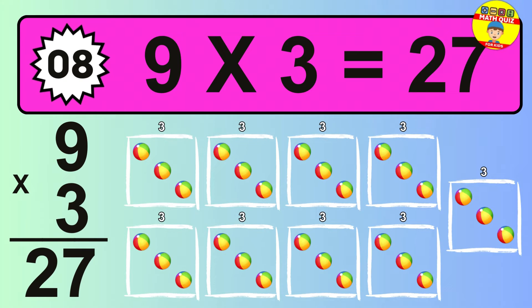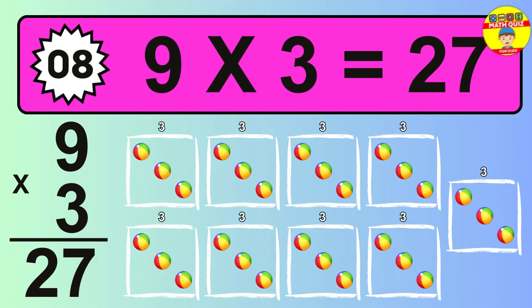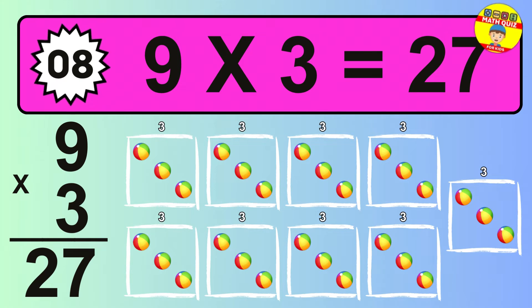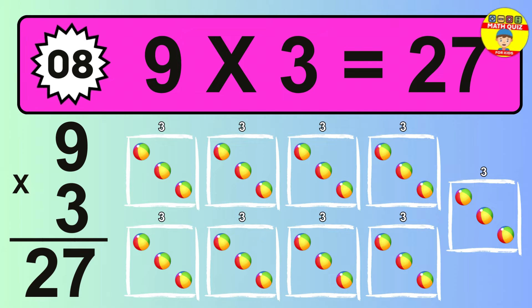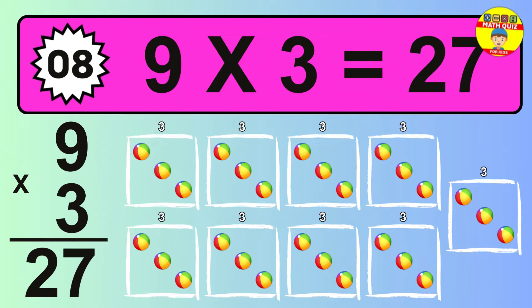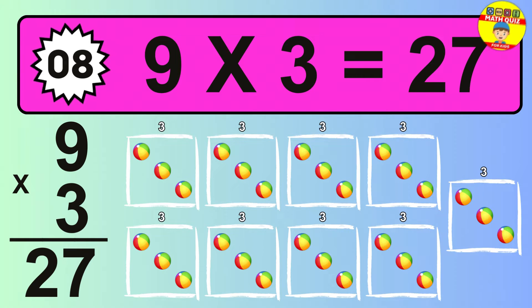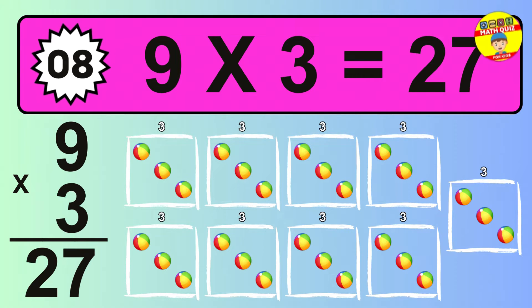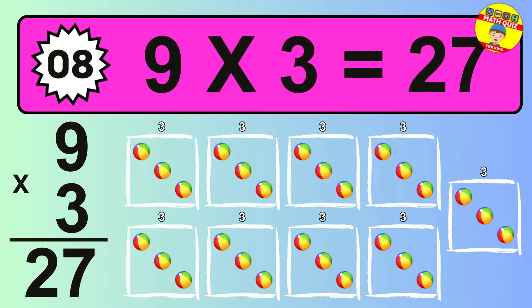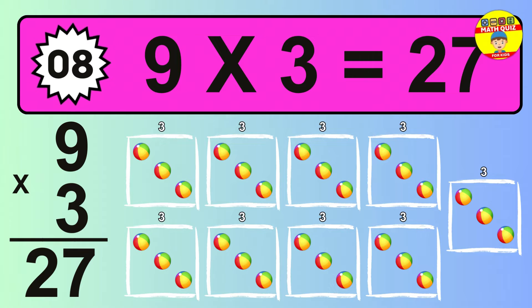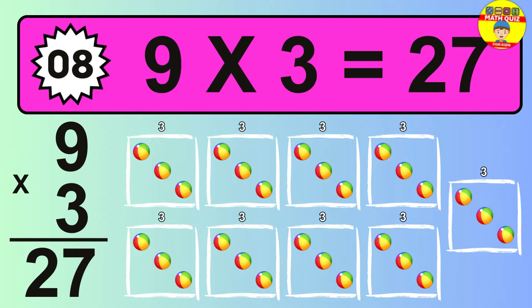The answer is 9 times 3 is 27. To calculate, we have 9 groups with 3 balls each one. So, how many balls do we have? 27 balls.